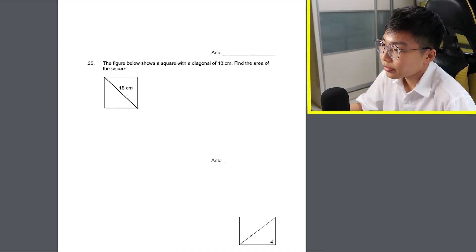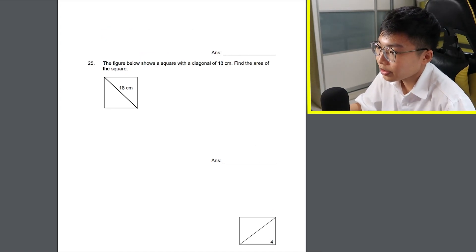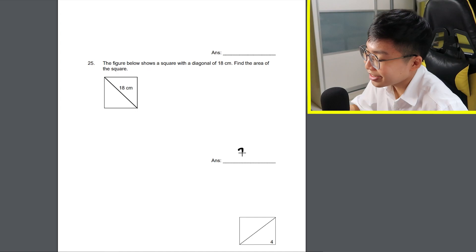The figure below shows a square with a diagonal of 18 cm. Find the area of the square. Area again, man. There's no way I can do this. Since the question is number 25, I'm just gonna put 25.